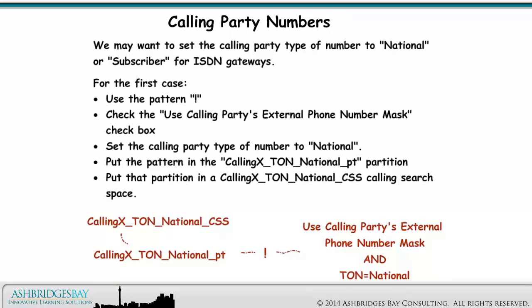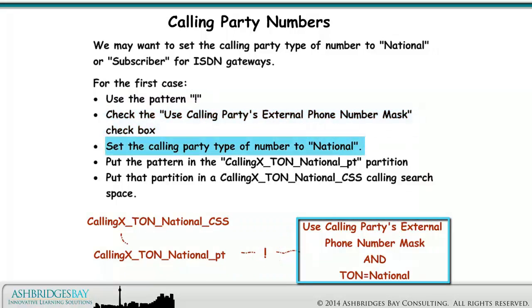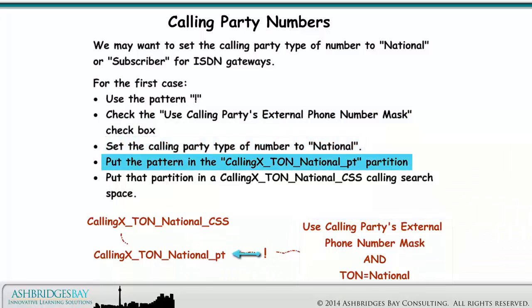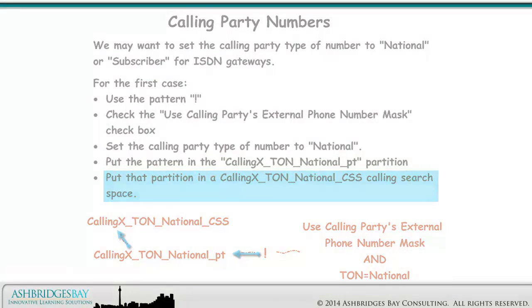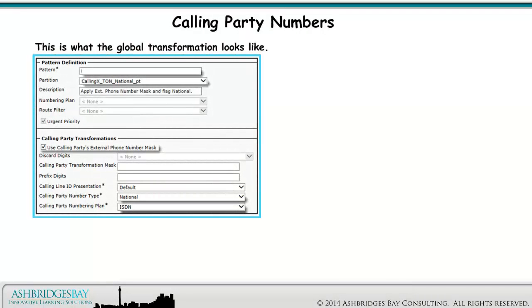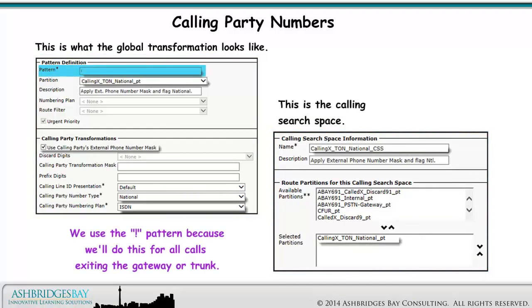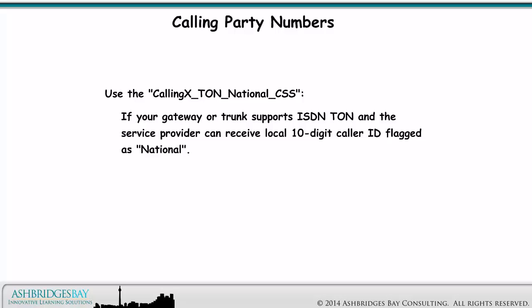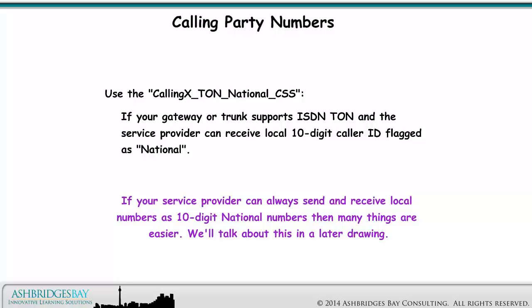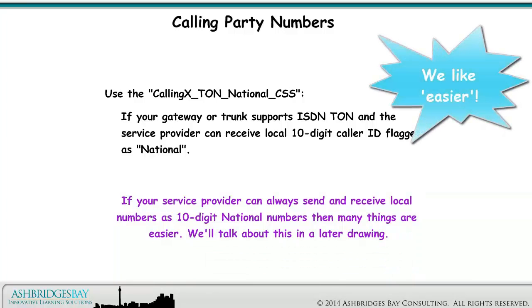We may want to set the calling party type of number to National or Subscriber for ISDN gateways. For the National case, use the pattern exclamation, check the Use Calling Party's External Phone Number Mask checkbox, and set the calling party type of number to National. Put the pattern in the Calling X Type of Number National partition, and put that partition in a Calling X Type of Number National calling search space. Use this calling search space if your gateway or trunk supports ISDN type of number and the service provider can receive local 10-digit caller ID flagged as National. If your service provider can always send and receive local numbers as 10-digit National numbers, then many things are easier.